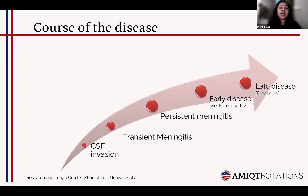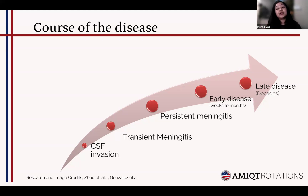The course of the disease begins with CSF invasion. When the organism invades the CSF, it may reach a transient stage where it clears away — that is transient meningitis. If the organism fails to clear and persists, it is called persistent meningitis. It then progresses to early disease, which may take weeks, months, or years, and can later progress to late disease, which takes decades to manifest.